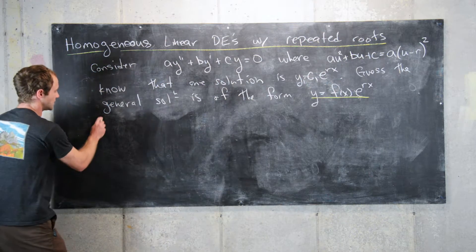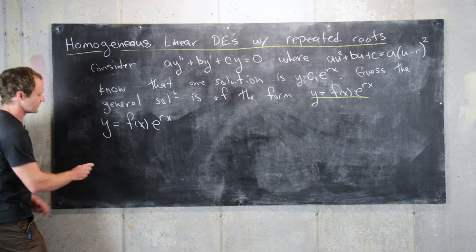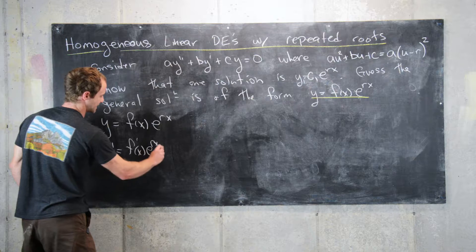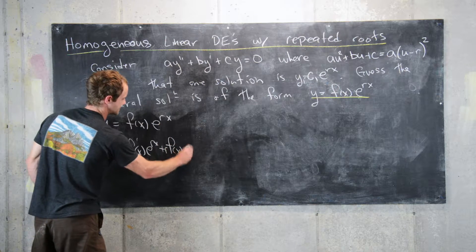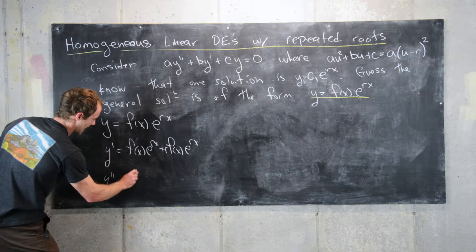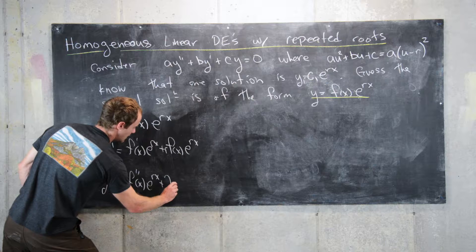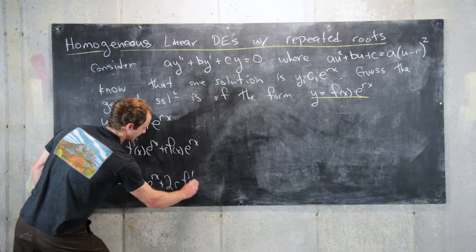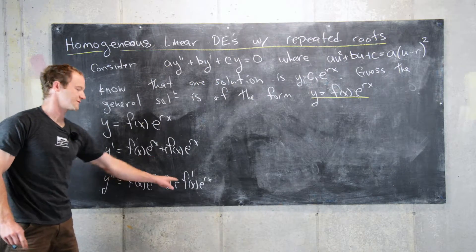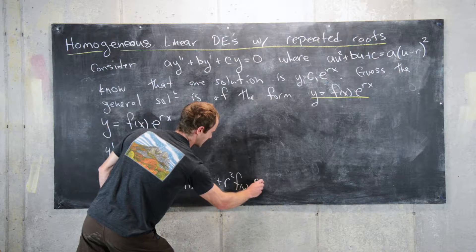What we want to do is plug in this guess solution into our differential equation. So, let's make a chart. We have y equals f of x times e to the rx. And now, we'll keep taking derivatives. So, y prime equals f prime of x times e to the rx plus r times f of x times e to the rx, using the product rule. And then, y double prime equals f double prime of x times e to the rx plus 2r·f prime of x times e to the rx plus r squared·f of x times e to the rx.